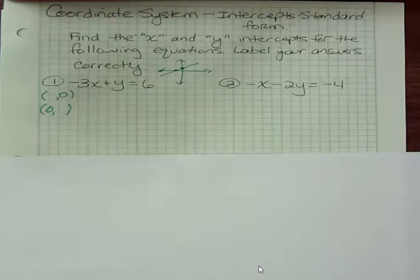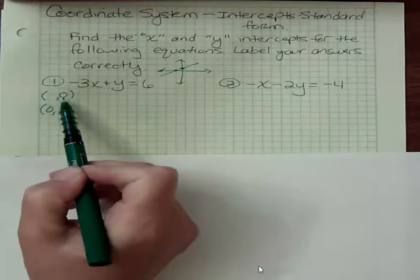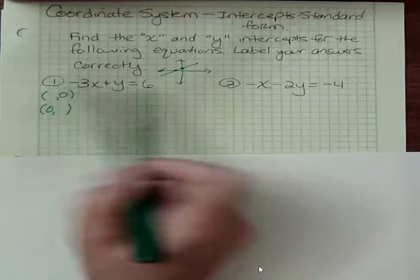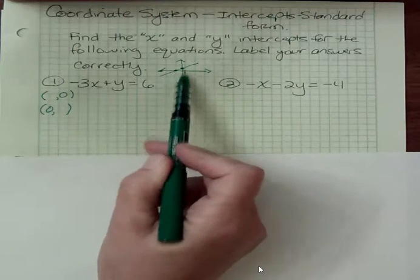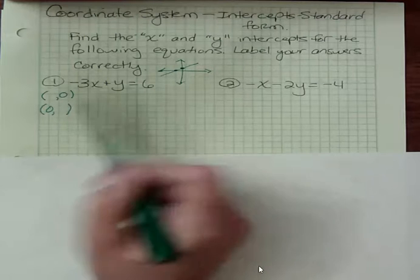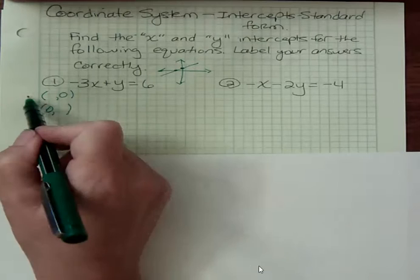It doesn't matter which one you find first. But which one would this be? Would this be the x intercept or the y intercept? Well, y is zero. So if I go left and right that's fine but I can't go up or down. So if I can't go up or down that means I'm going to be stuck on the x axis. So this is an x intercept.